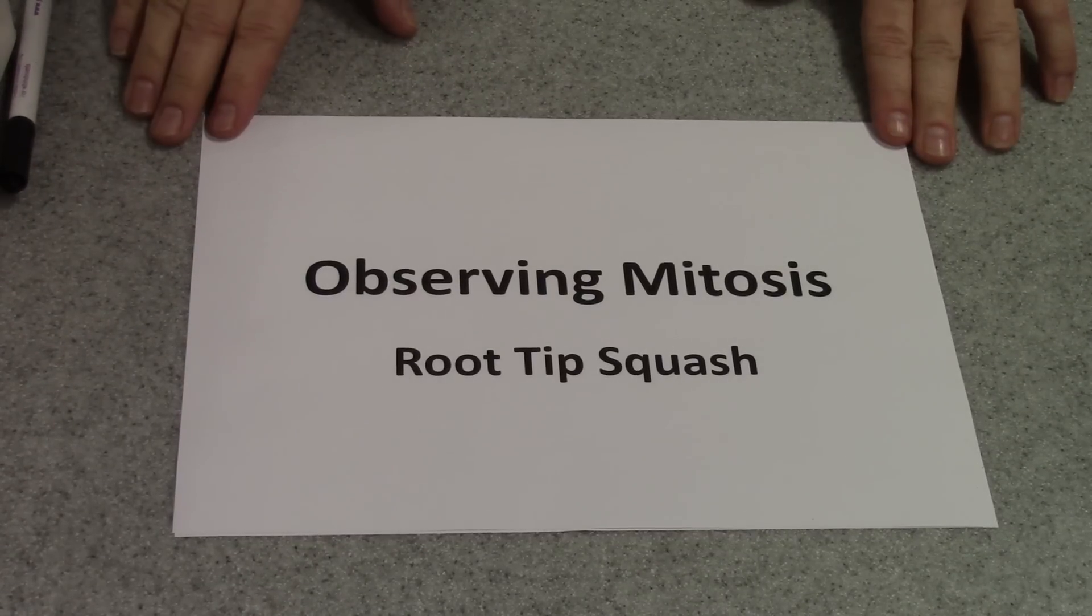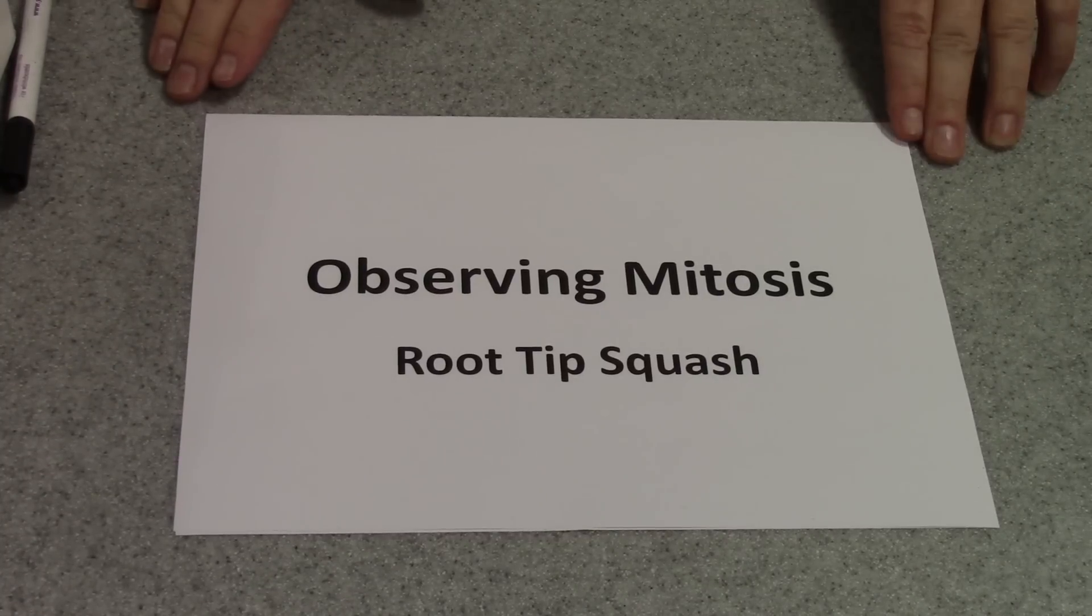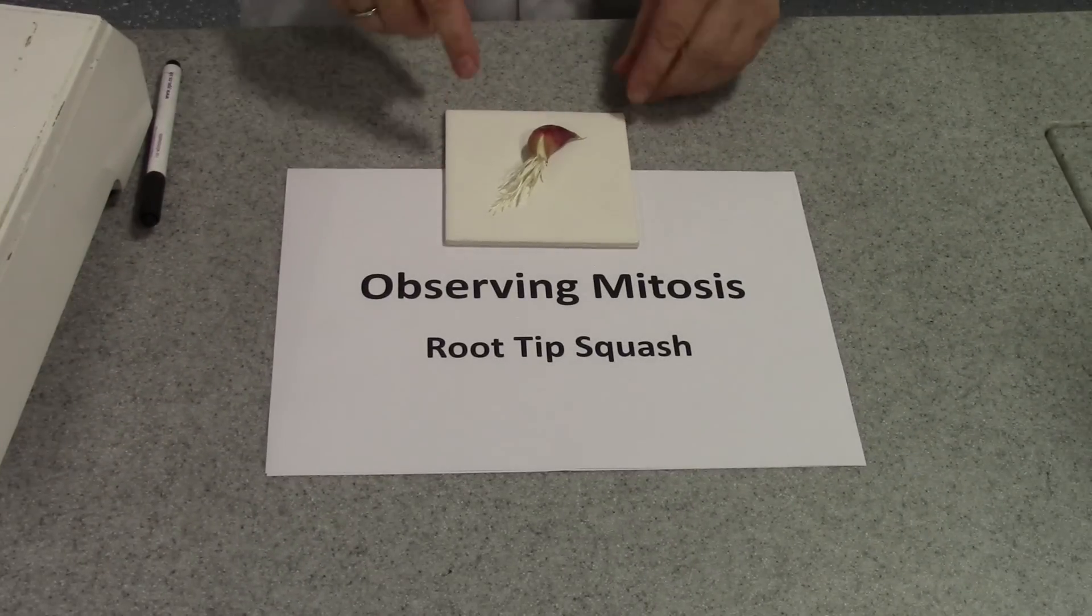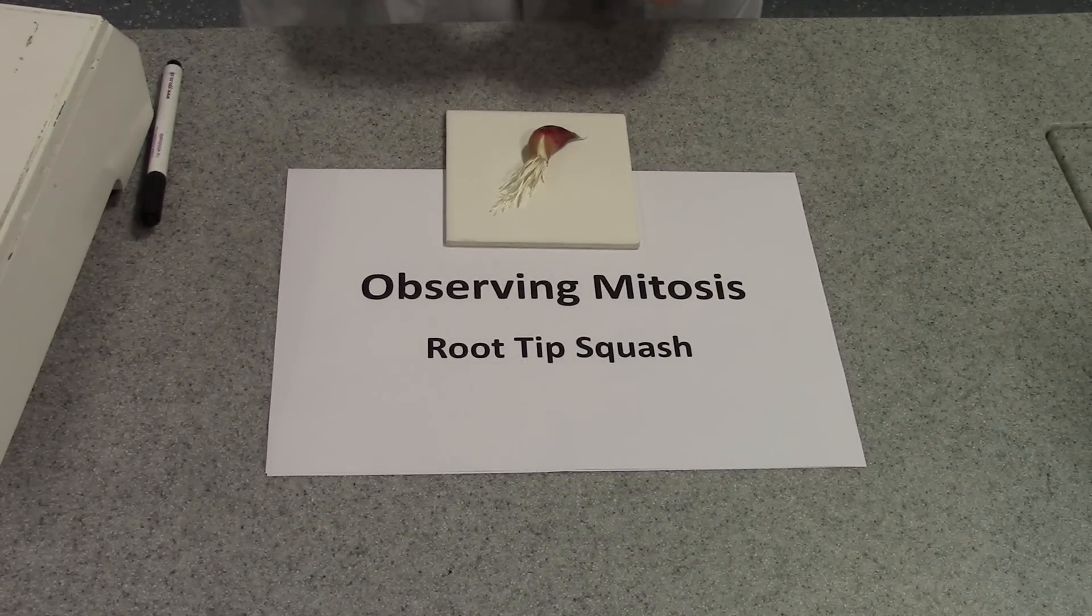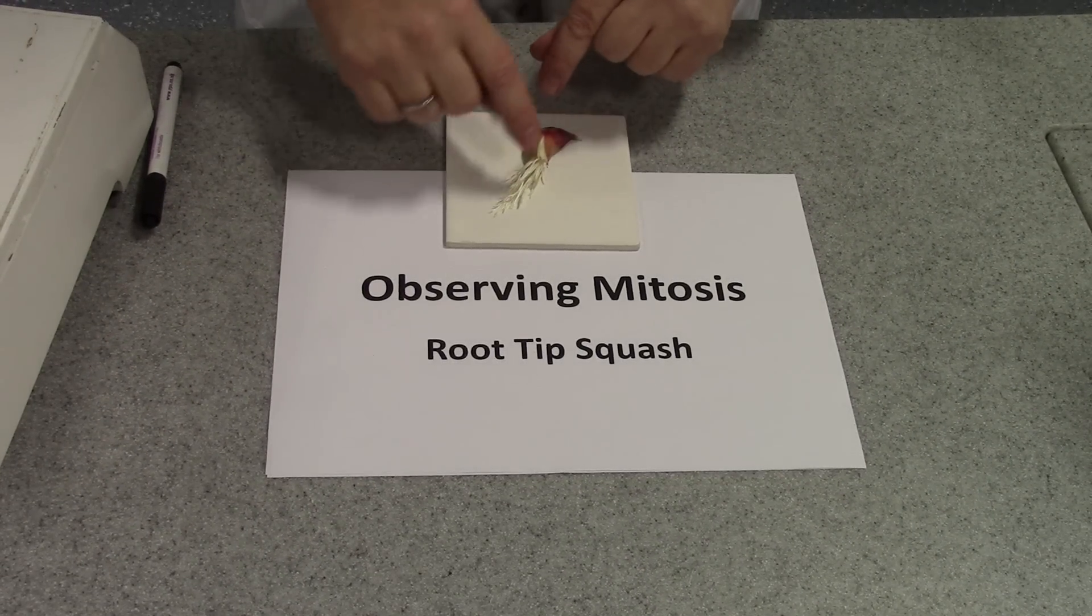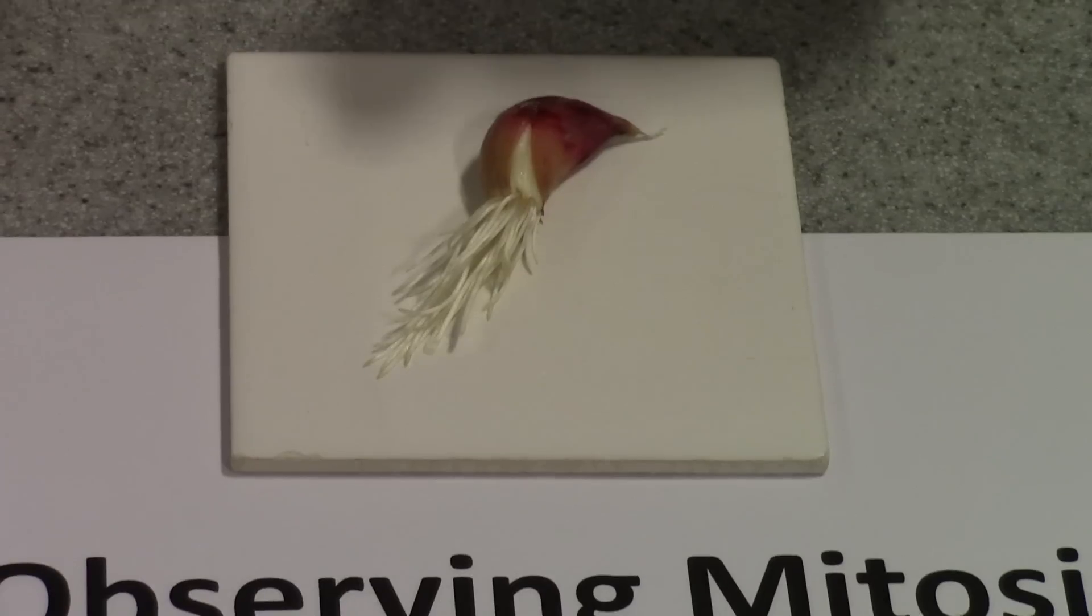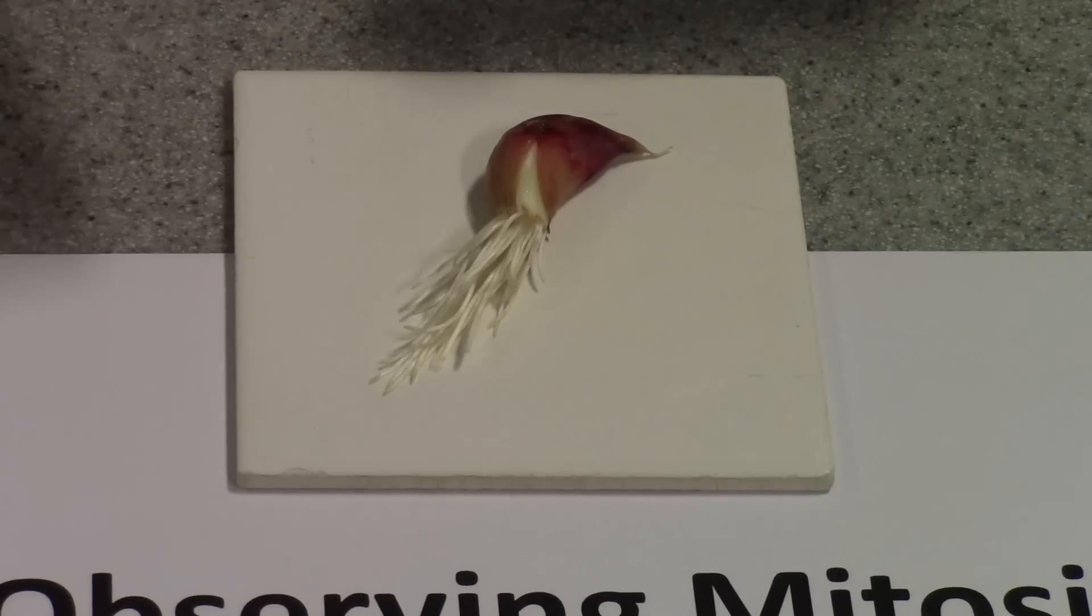Today I'm going to show you how to actually observe mitosis by preparing a root-tip squash. For this, I'm going to use onion or garlic roots. This is a little clove of garlic that's been suspended over some water in a test tube and it's actually started to grow down roots. Now the reason that we choose roots for this is that the tips of roots have special tissue called meristem where the cells are undergoing mitosis.